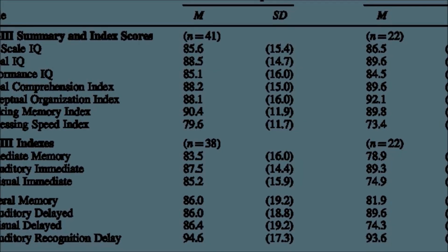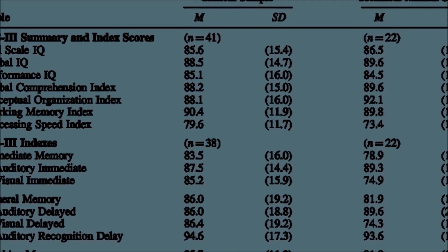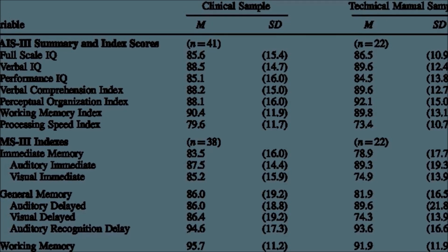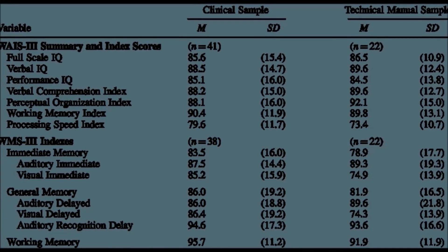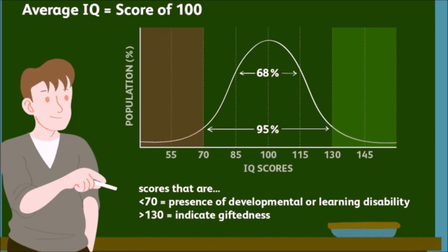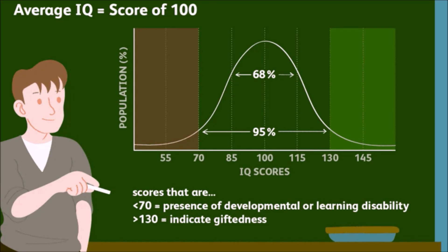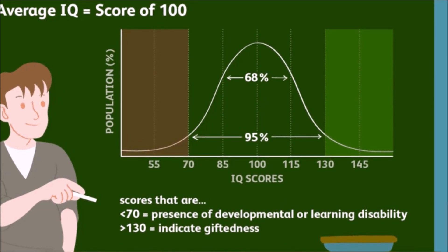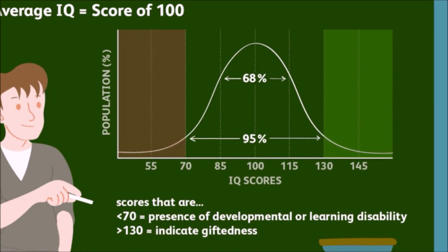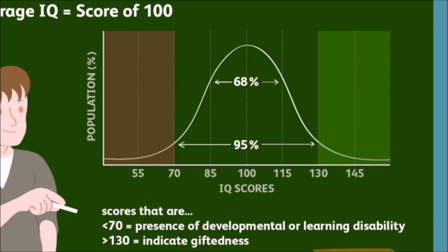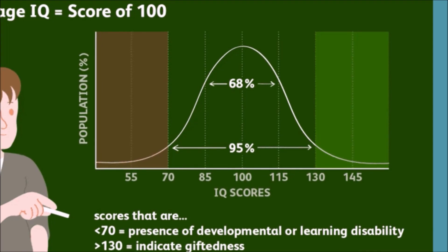This process allows psychometricians to establish norms or standards by which they can compare individual scores. So, what are the norms? Intelligence test scores typically follow what is known as a normal distribution, which is a bell-shaped curve in which the majority of scores lie near or around the average score.